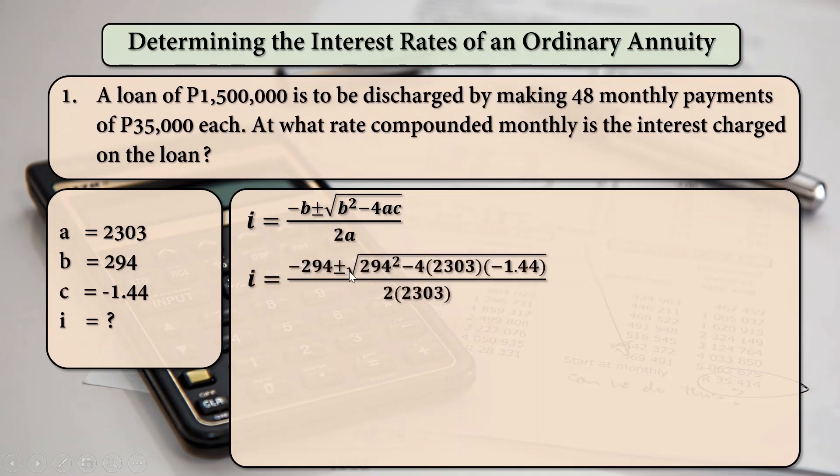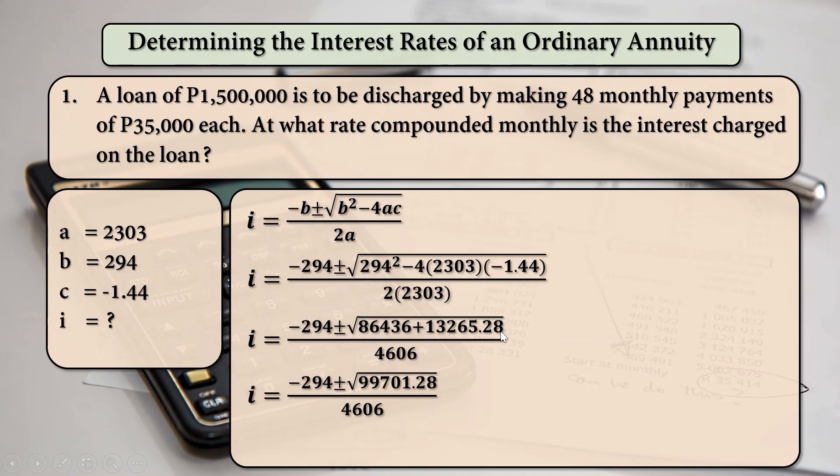So, B is 294, A is 2303, C is negative 1.44. And 294 squared is equal to 86,436 plus these 3 numbers will be multiplied altogether and the result will be 13,265.28 all over 4,606. So, 2 times 2,303 is 4,606. So, the resulting value under our square root sign is 99,701.28. Square root of that will be 315.76.